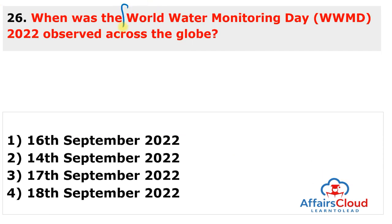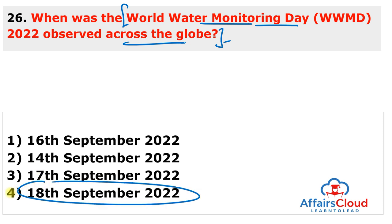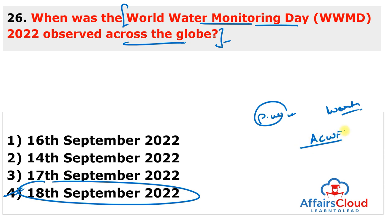World Water Monitoring Day 2022 was observed on 18th September 2022 to increase public awareness of water monitoring and recognize the importance of protecting the world's water resources. It was proclaimed by the American Clean Water Foundation (ACWF) as a global educational outreach programme launched in 2003.